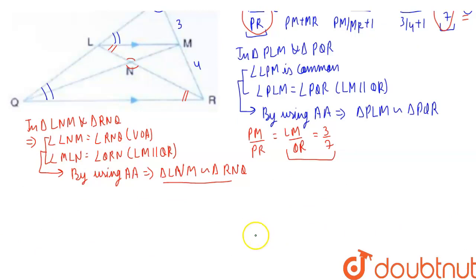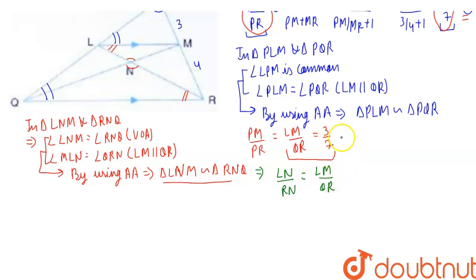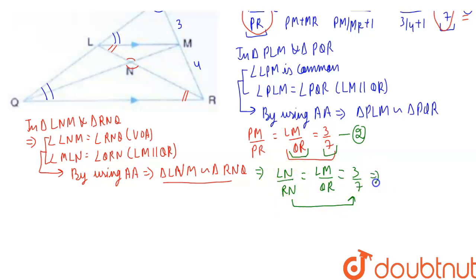Since triangles LNM and RNQ are similar, their corresponding sides are in the same proportion. So LN upon RN equals LM upon QR. We have already computed LM/QR = 3/7 (equation 2). Therefore, LN upon RN is also 3/7. Let us name this result 3.